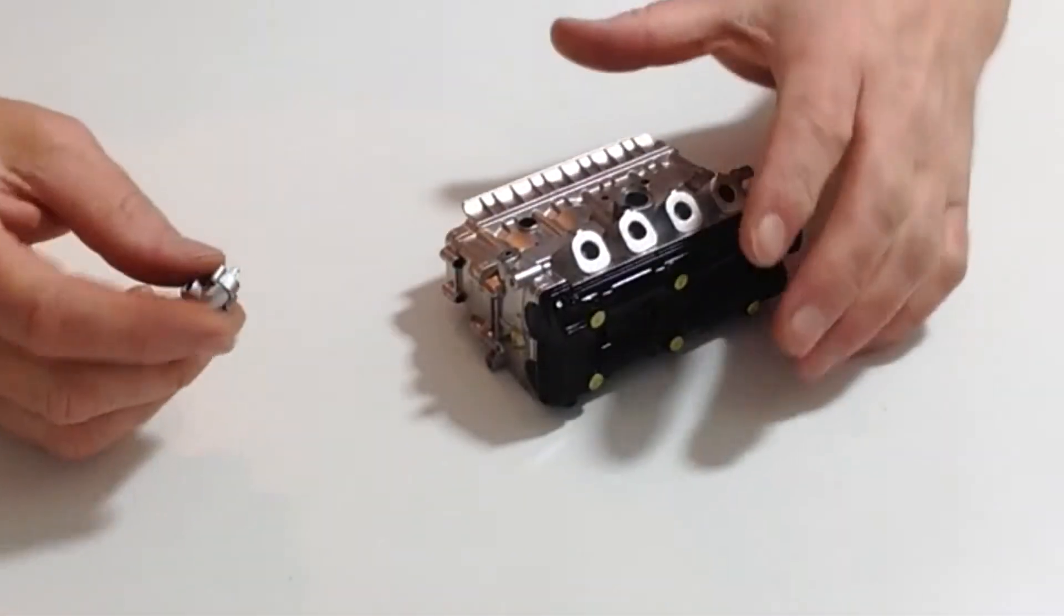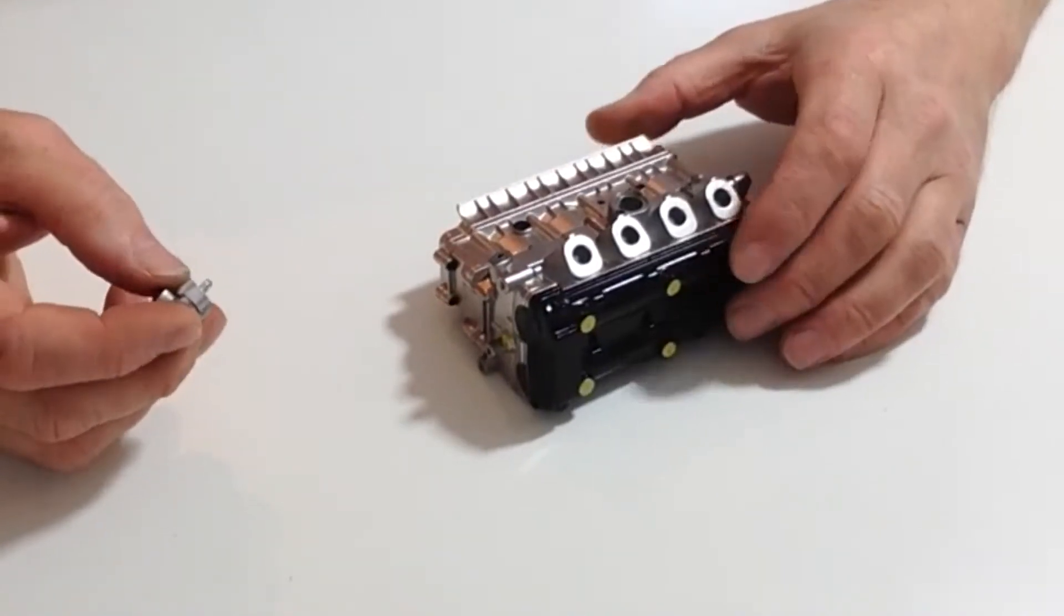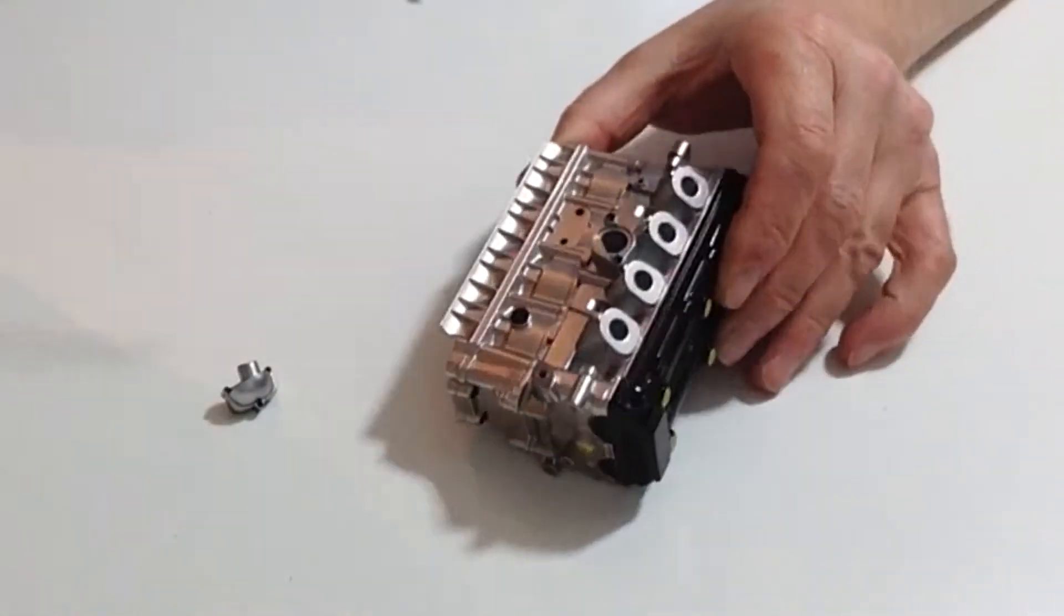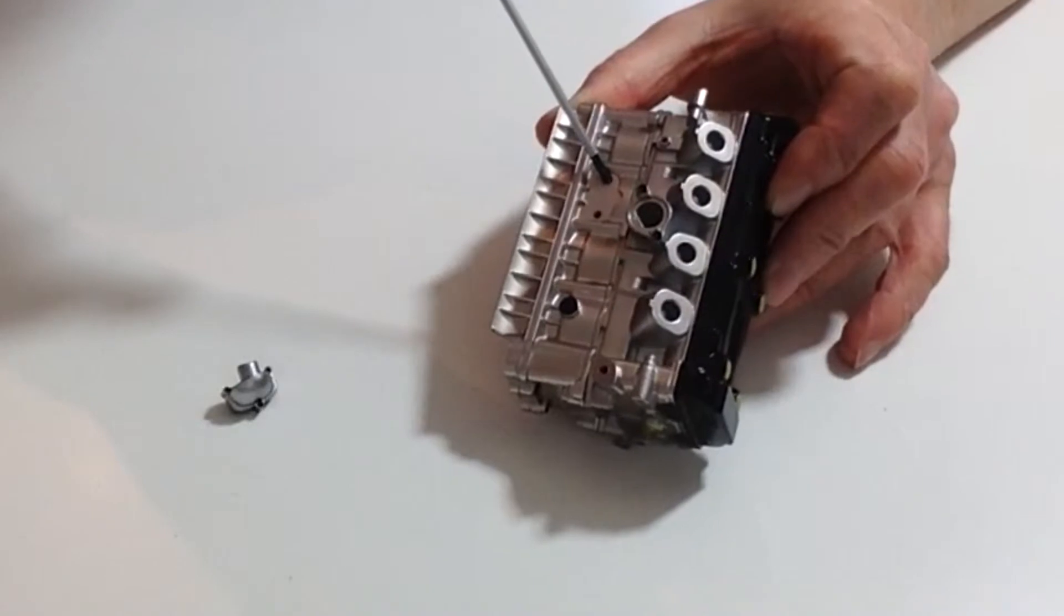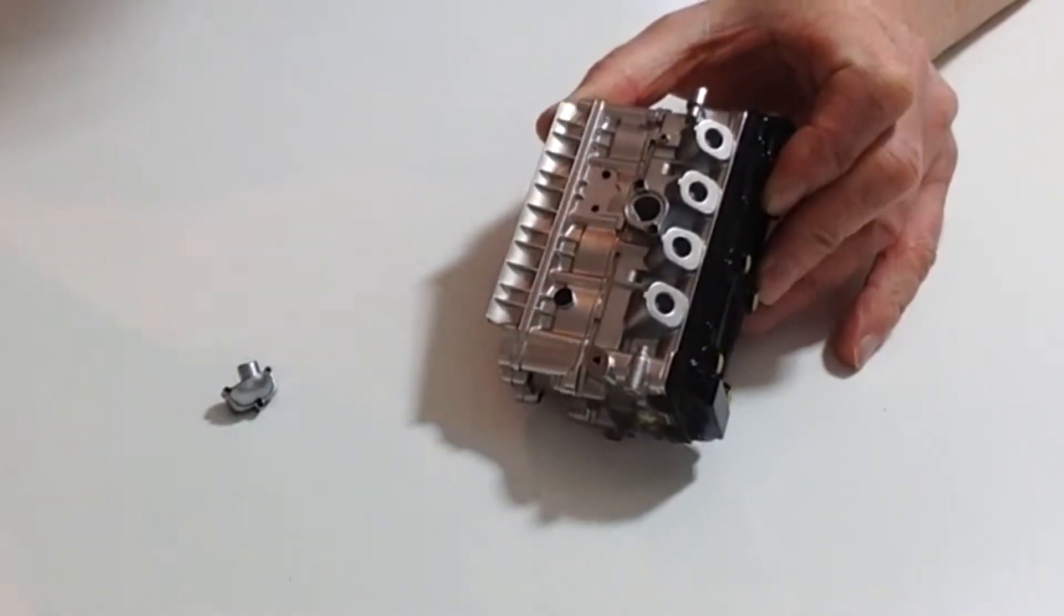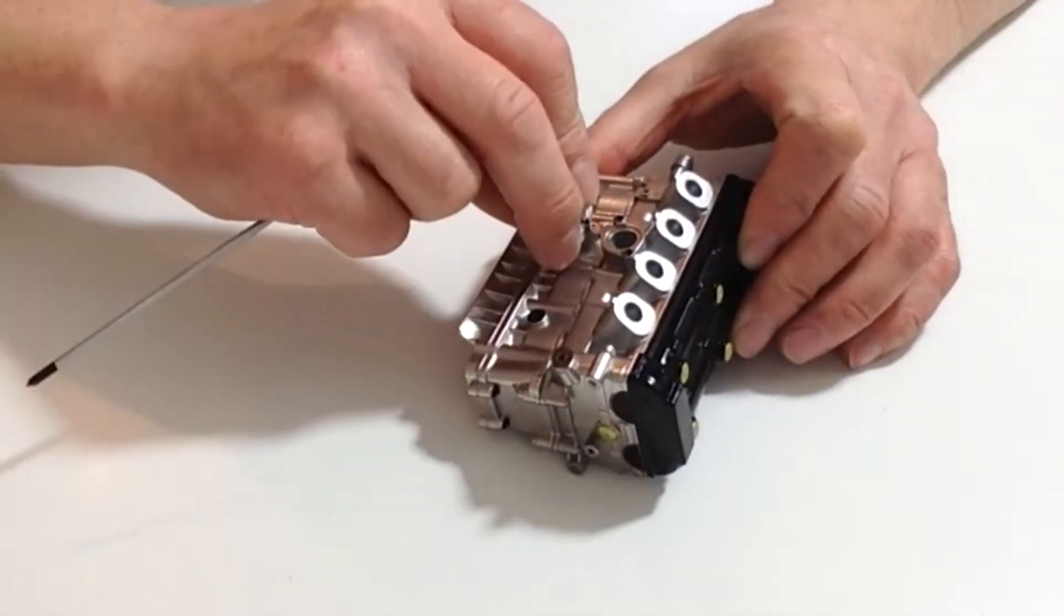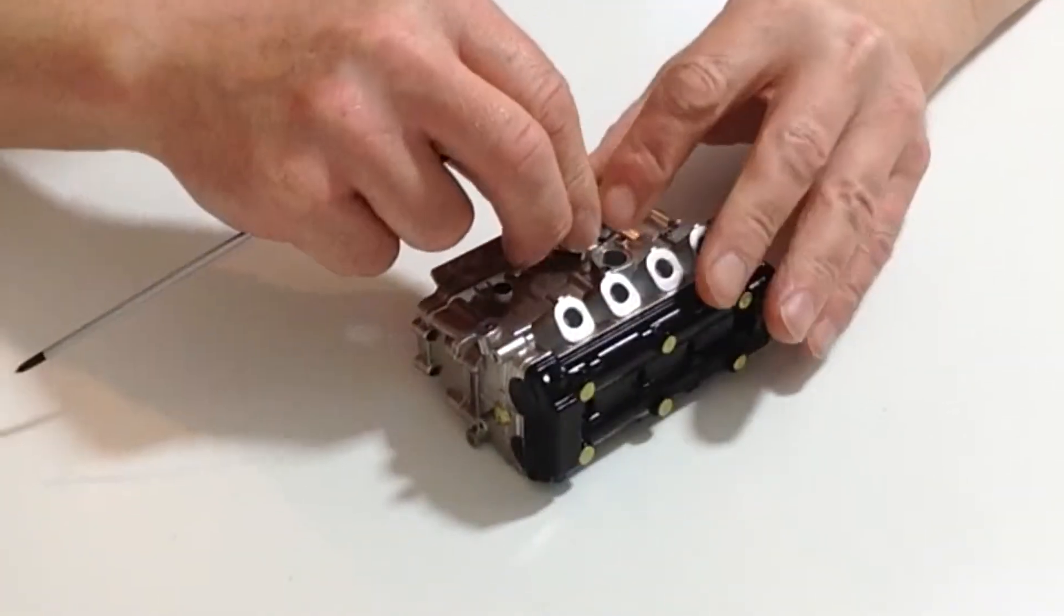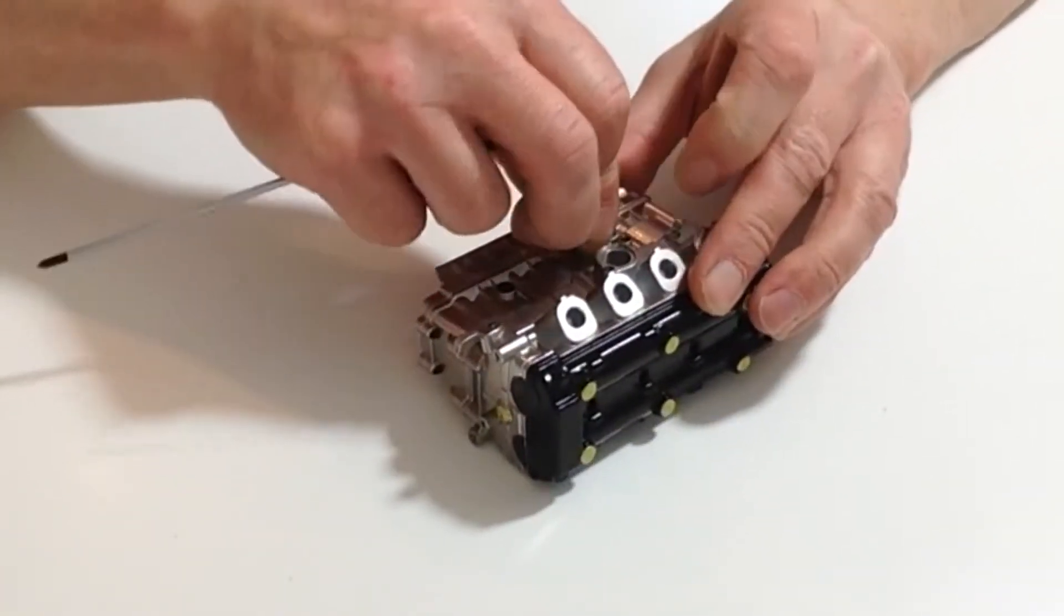Now take the breather cover from stage 42. You will notice two holes on the side of the cylinder block and two projections. Align those, place it, and push it down into position.